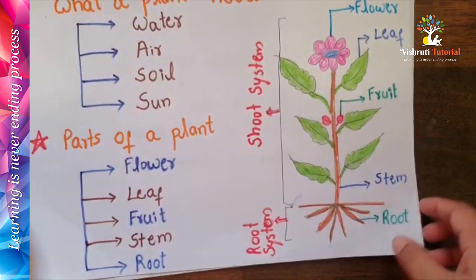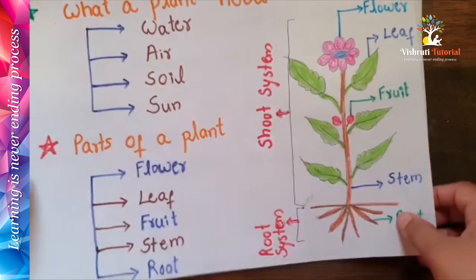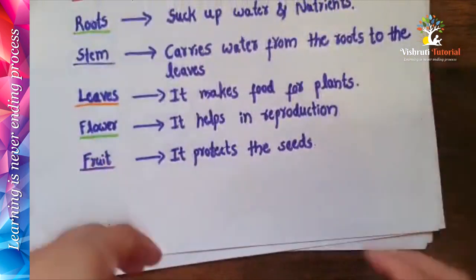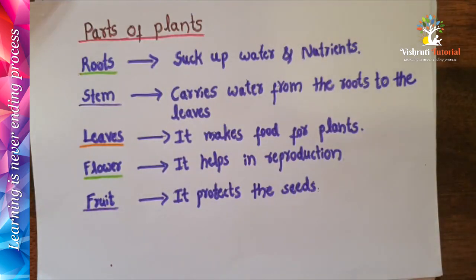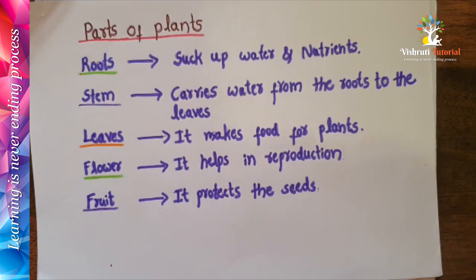Now let me explain the parts in detail. First, roots — roots suck up water and nutrients from the soil. Roots absorb the water and nutrients and send them up the plant. Next, the stem — the stem carries water from the roots to the leaves.